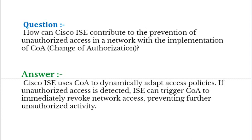Our next interview question is: How can Cisco ISE contribute to the prevention of unauthorized access in a network with the implementation of COA, i.e. Change of Authorization? Your answer should be: Cisco ISE uses COA to dynamically adapt access policies. If unauthorized access is detected, ISE can trigger COA to immediately revoke network access, preventing further unauthorized activity.